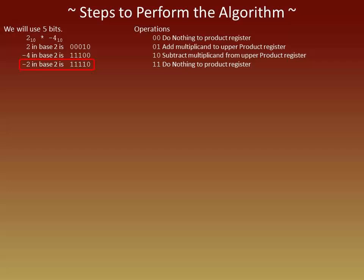Now that we've seen the operations, let's go back to that negative 2. Why do we need to know the binary value of negative 2? Well, the operation means we need to subtract the multiplicand. Since the multiplicand is positive, an easy way to subtract it is to add the complement of the multiplicand. Therefore negative 2 is the complement of 2. So if we add the binary value of negative 2 to the product register, we are still actually subtracting it since it's a signed integer. That's why I recommend using the complement of the multiplicand for the subtract operation.